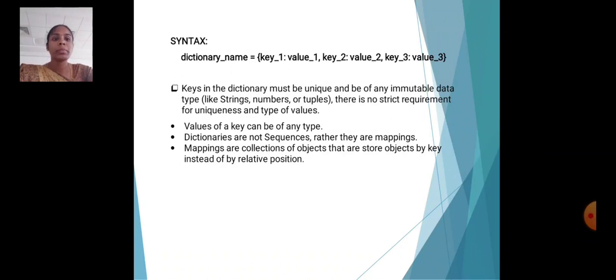Keys in a dictionary must be unique and be of any immutable data type like strings, numbers, tuples. There is no strict requirement for uniqueness and type of values. Value of a key can be of any type. Dictionaries are not sequences; rather, they are mappings. Mappings are collections of objects that store objects by key instead of by relative position.